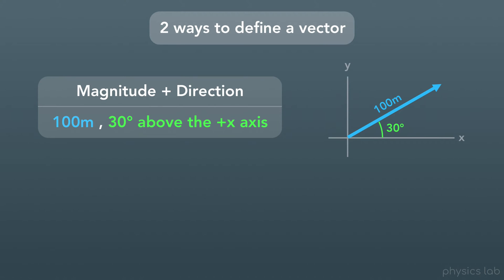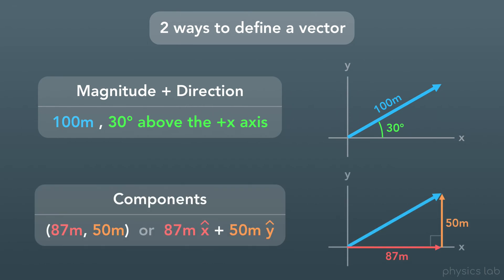The second way to define a vector is by using its two components. If we create a right triangle with the vector as the hypotenuse of the triangle, the other two sides become the components of the vector. Here we have an x component of 87 meters and a y component of 50 meters. Since right triangles always have one angle that is 90 degrees, they're sort of partially constrained already, and it turns out that we can fully define this blue vector using only these two other sides. No other vector could be created by using these two components.